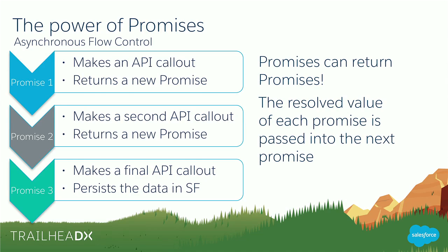So what makes promises powerful and why are they better than callbacks? That is a religious argument up there with Vim versus Emacs. What promises try to do is help you make sense of your asynchronous code so you can work through it easier and faster. Asynchronous is hard — let's try to make it as easy as possible. One promise can return a promise, and because of that you can chain them together. There is an upper boundary to how many you can chain in Apex, but it's pretty large. The power of promises is in their chaining.